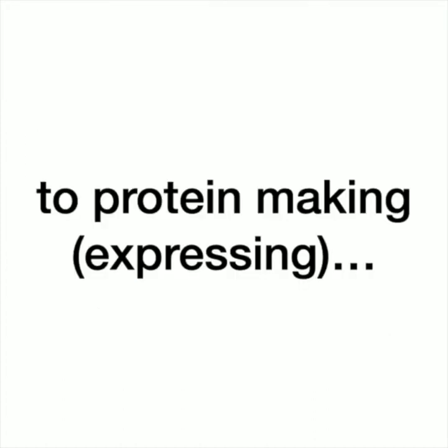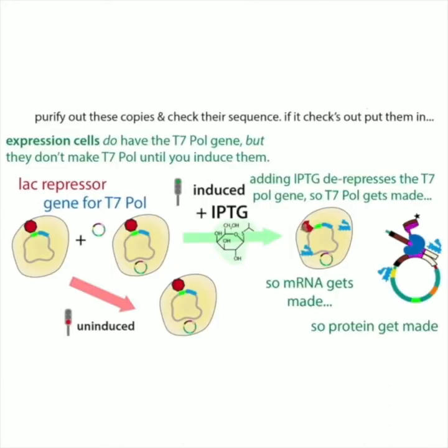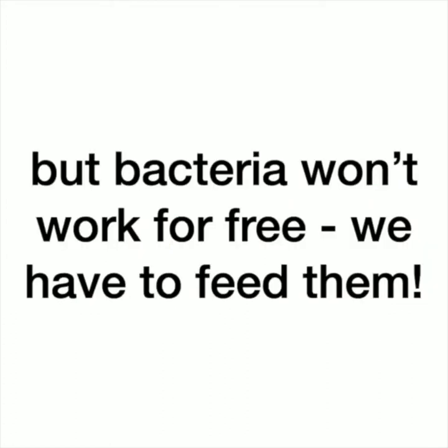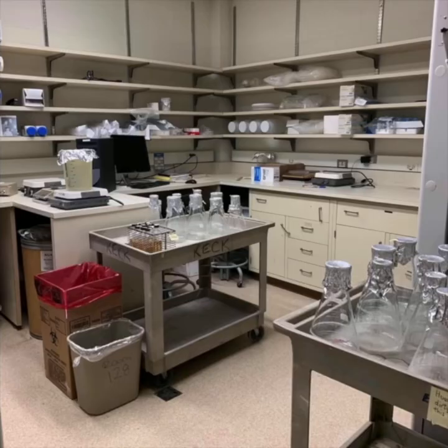Bacteria can be really good for making lots of copies of DNA, and they can also be good for making protein from the DNA you put in. We typically do this in different types of cells, and we can do things like induced expression — have them make the protein on demand, as with the IPTG induction system. But bacteria won't work for free; we have to feed them.